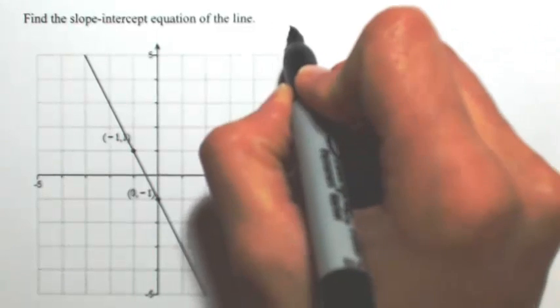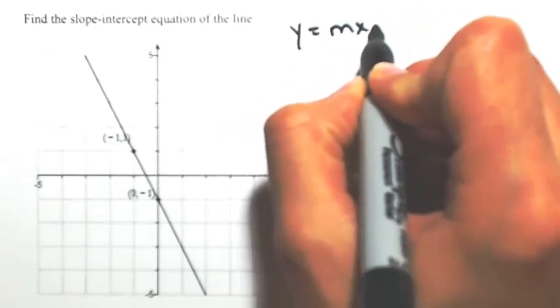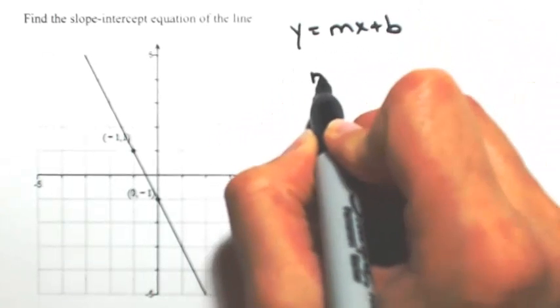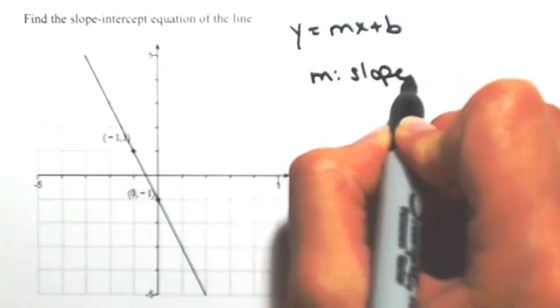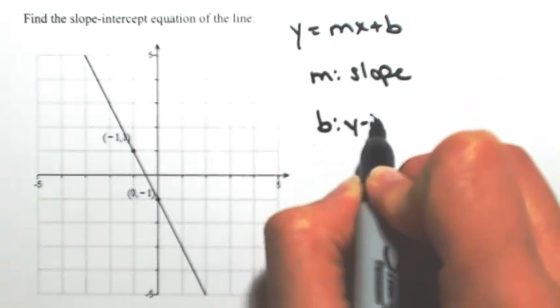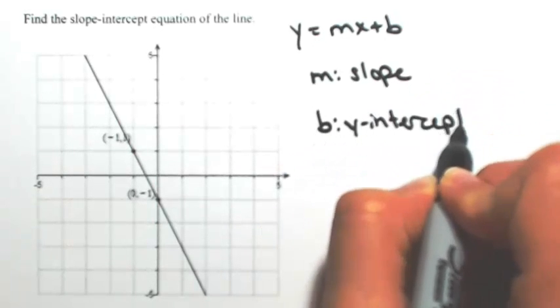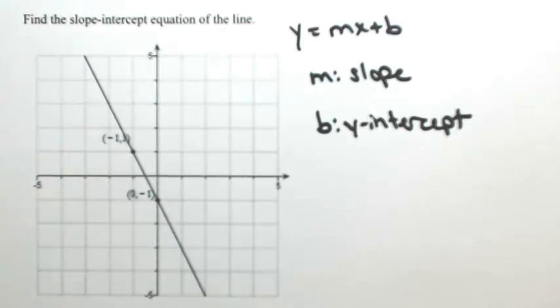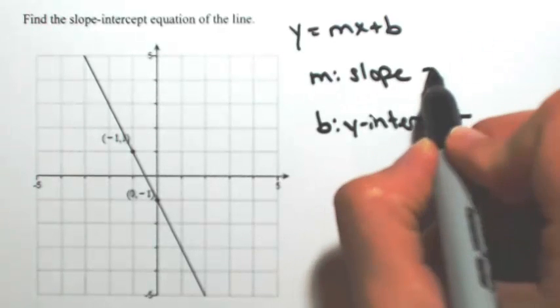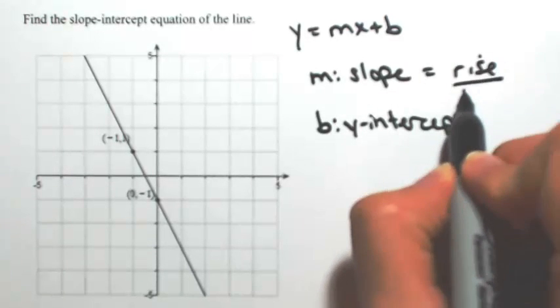So the slope-intercept equation is going to be y equals mx plus b, where m represents the slope and b represents the y-intercept. The slope is basically found by taking the rise over the run.